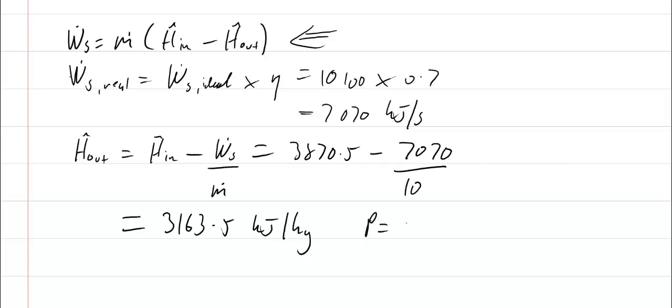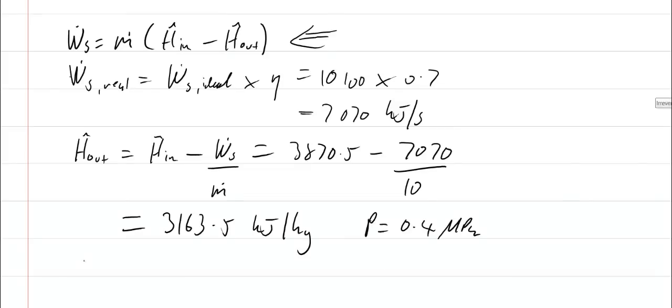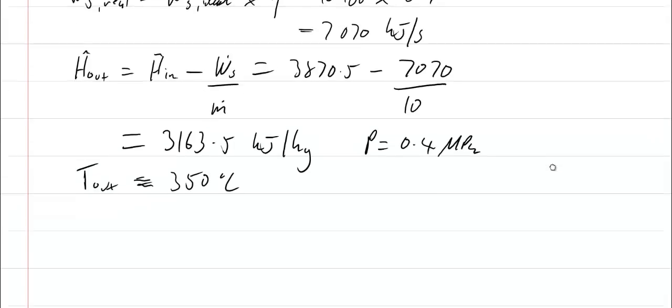The pressure is still 0.4 megapascals, so we can find the pressure that corresponds to that enthalpy. We're looking for 3163, and we're sitting almost exactly between 300 and 400 degrees Celsius. I'll estimate that the temperature out is approximately equal to 350 degrees Celsius.